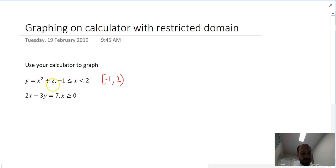So y equals x squared plus 2, when x is between negative 1 and 2, equal to negative 1 but less than 2.